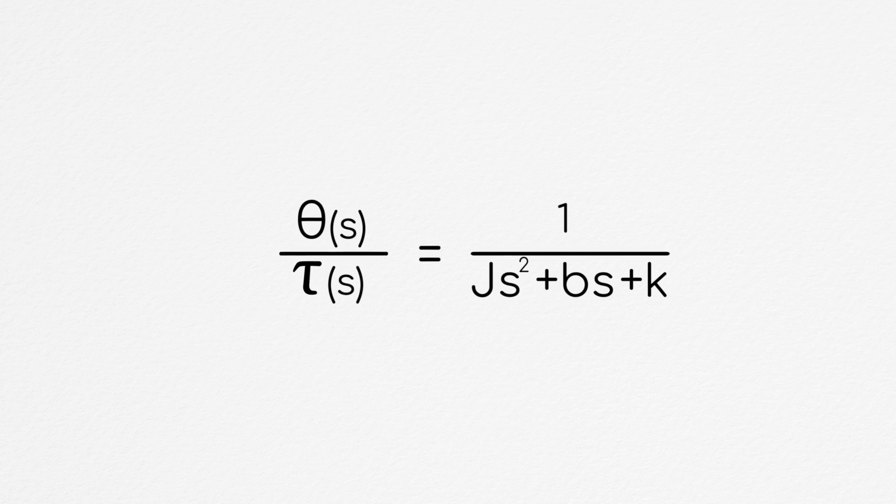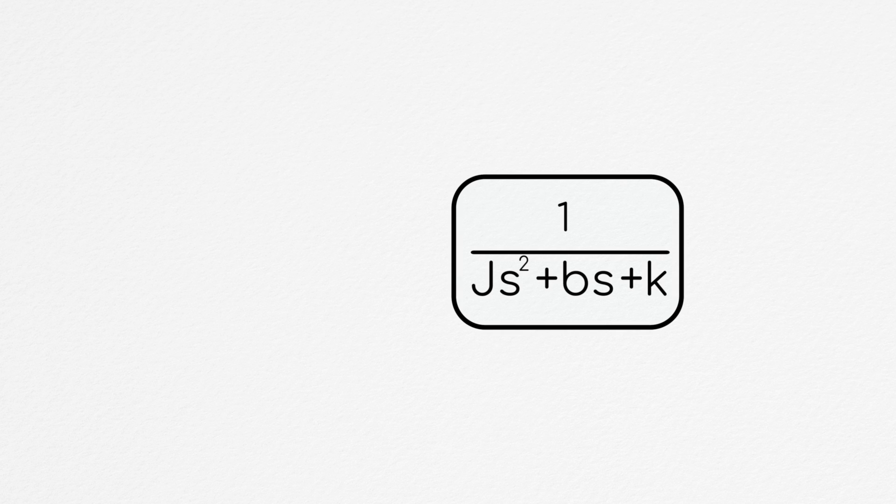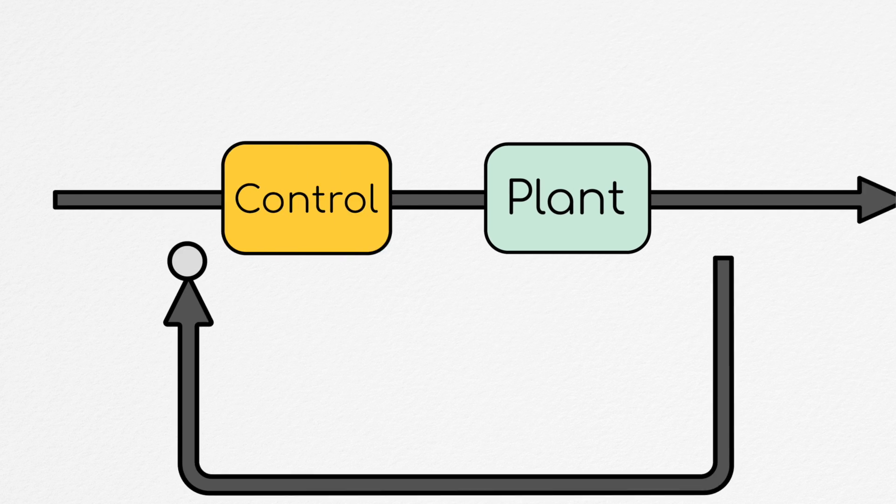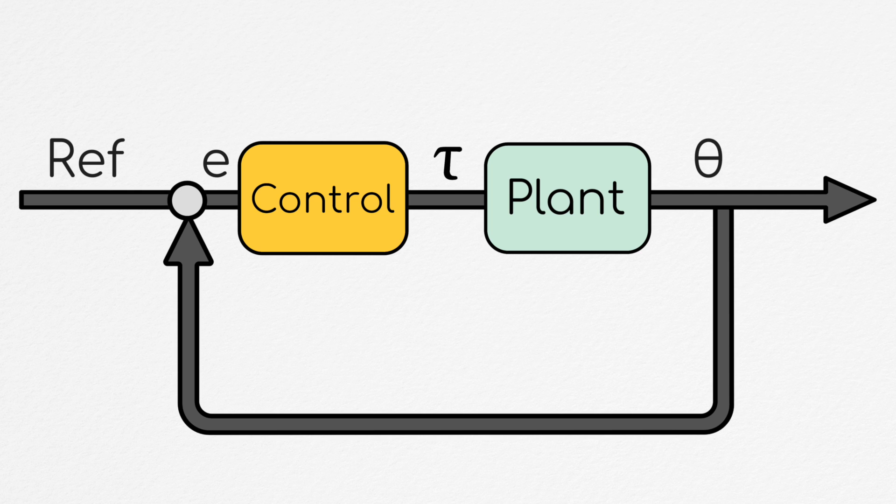So this transfer function describes our motor servo system and how it responds to an input torque, but we want to be able to control how it's oriented. So we're going to wrap this system in a feedback control loop. This loop will look at how our system is positioned, compare it to how we want the system to be positioned, and then apply an appropriate torque to drive the system to this desired orientation.